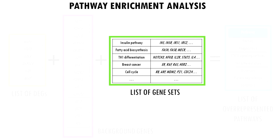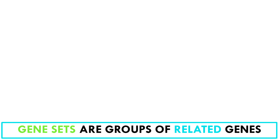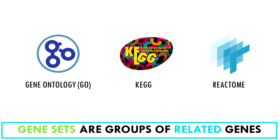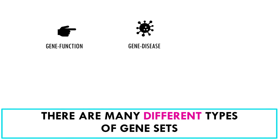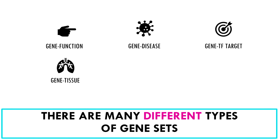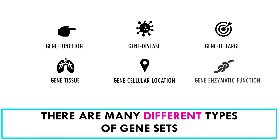There are many databases of gene sets out there. Some of the most widely used are Gene Ontology (GO), KEGG, and Reactome. Gene Ontology focuses on biological processes, KEGG is more focused on metabolic pathways, and Reactome is a curated database of human molecular pathways. But gene sets are not restricted to functions — there are gene sets for diseases, tissues, and transcription factor targets. The list is endless.